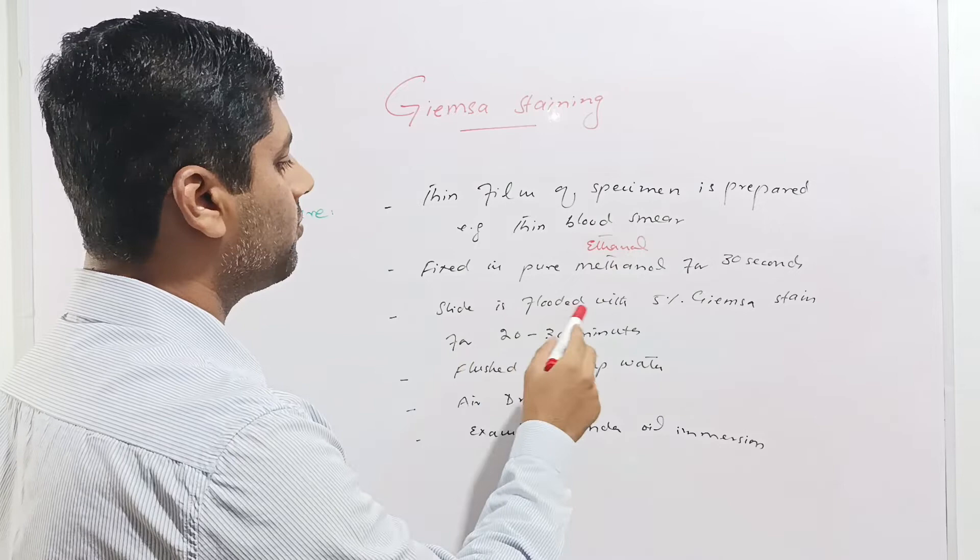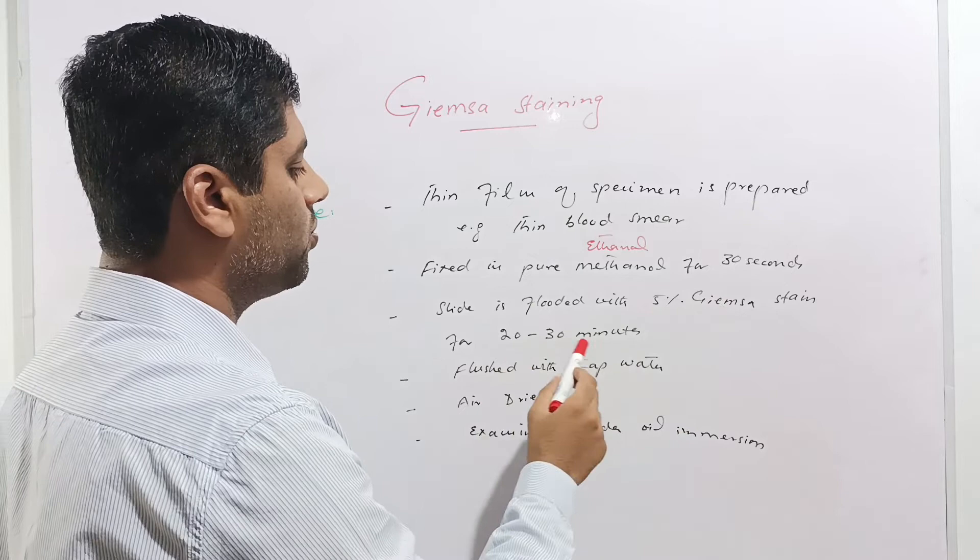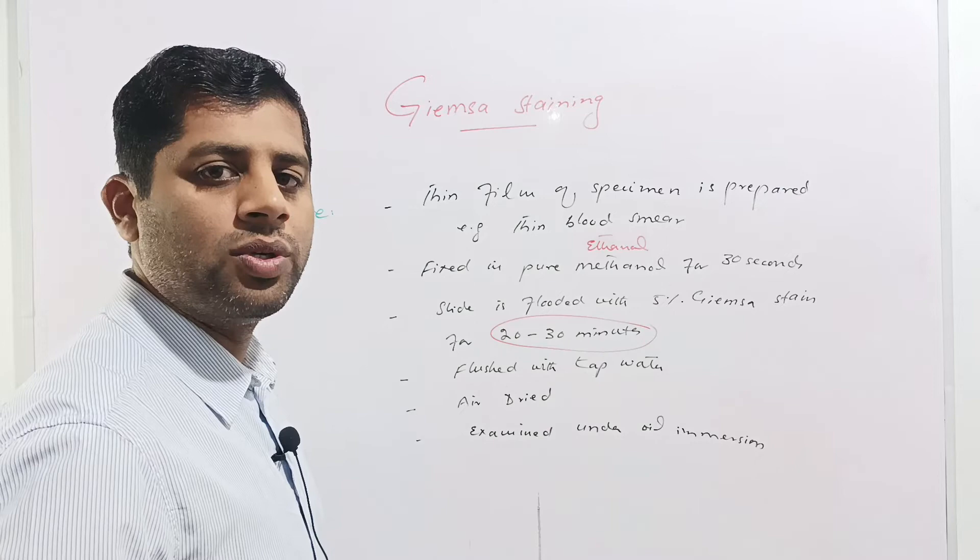Then the slide is flooded with 5% of the Giemsa stain, and this Giemsa stain should remain on the slide for 20 to 30 minutes. It takes 20 to 30 minutes for the Giemsa stain to penetrate into the nucleus of the cell.